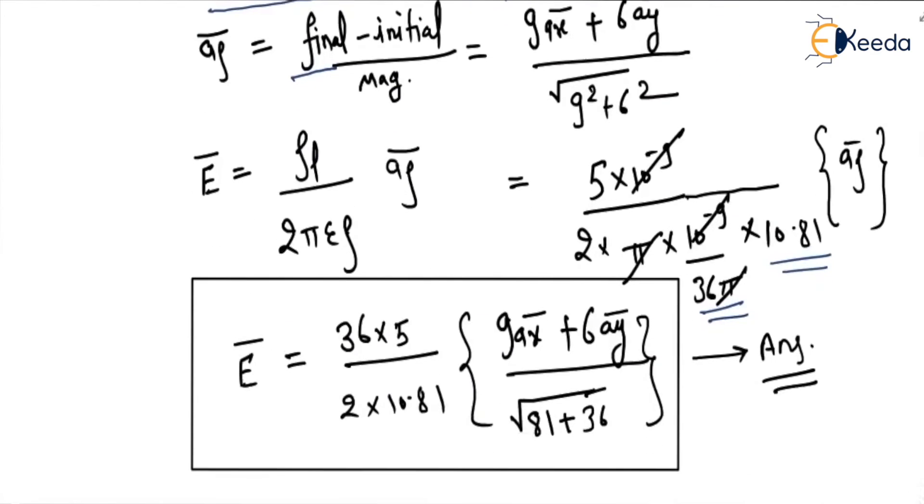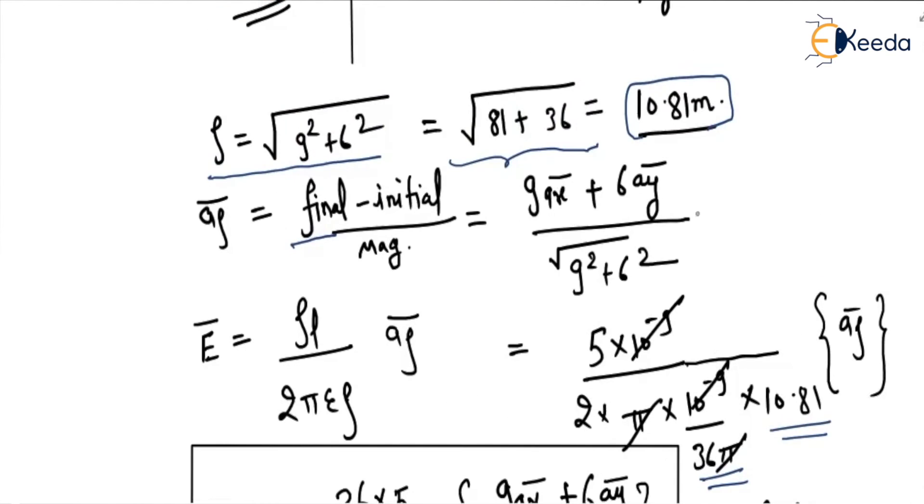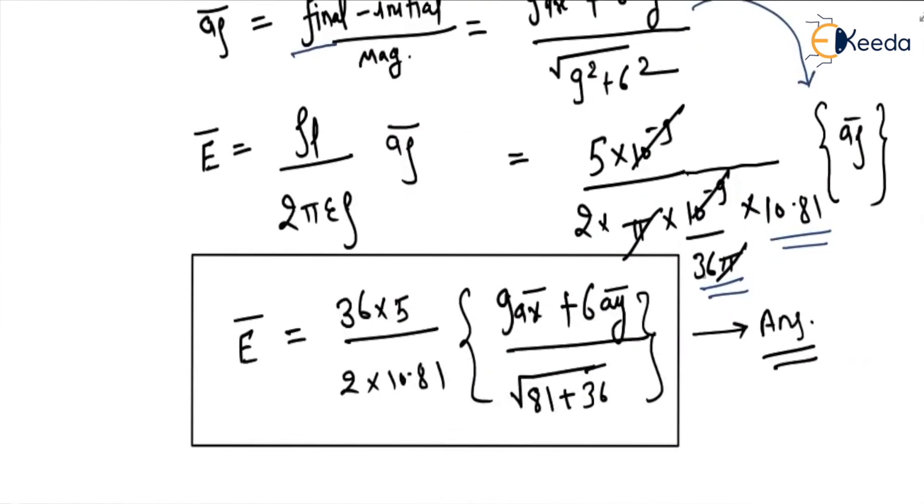So after solving, we will get this answer. We will put the value of a_rho here. So this answer is 36 × 5 because we will put epsilon value. Epsilon value is 10^(-9) divided by 36π, rho and π.